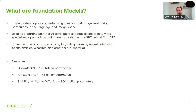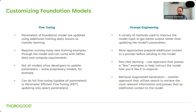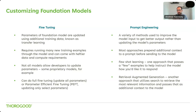The next question is how we take these foundation models and specialize them for our use cases. There are two key approaches. The first is fine-tuning, where the parameters of the foundation model are updated using additional training data — sometimes known as transfer learning. Fine-tuning uses a large number of new training examples and runs those through the model. It typically requires heftier data and compute requirements, though not anywhere near the scale needed to build your own model from scratch.